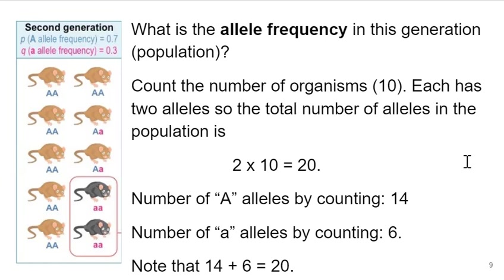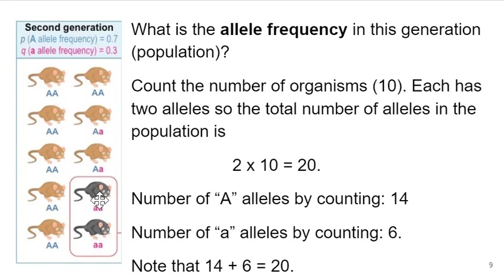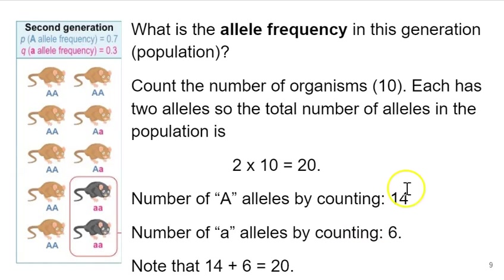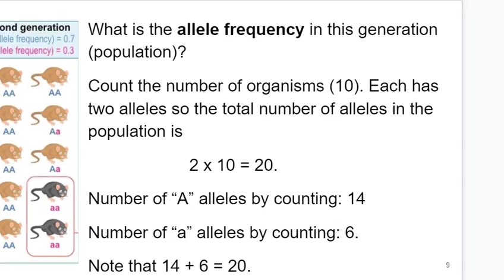There are only two alleles, so there can only be two allele frequencies, and together they must sum to one. The number of big A alleles, when counted, is 14. The number of little a alleles, when counted, is 4 from the homozygous recessive mice plus 2 from the two heterozygotes, giving 6 total. So 14 out of 20 is the frequency for the big A allele, and 6 out of 20 is the frequency for the little a allele.